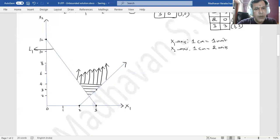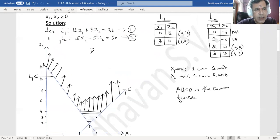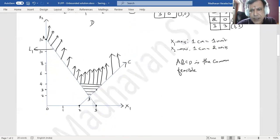It goes to infinity. It's not a closed polygon, it is open from the top. Okay, now let me put this one as A, this one as B, this one as C, and somewhere here D. ABCD is the common feasible region. Common feasible region means any point in that region will satisfy both these constraints.